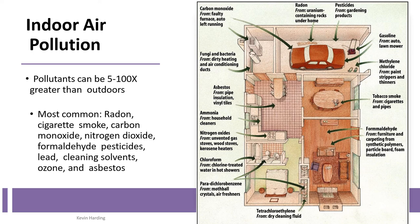Other indoor pollutants include drain cleaning fluid, mothballs, paints, thinners, and stripping materials in garages — all of which could be primary or secondary pollutants trapped in the house. Tobacco smoke from indoor smoking is also a significant issue. These chemicals can accumulate indoors as primary or secondary pollutants.